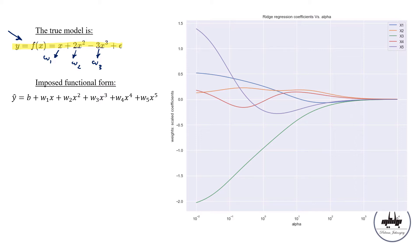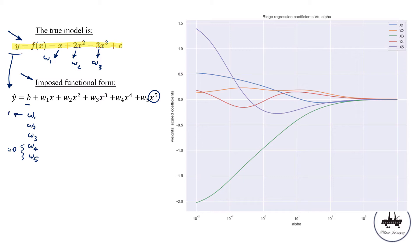We're going to impose a functional form to the model: a polynomial model with a bias term plus coefficients up to the power of 5. We have five weights to estimate: W1, W2, W3, W4, and W5. As a reminder, we know that W4 and W5 should be exactly equal to zero or close to zero, W1 should be 1, W2 should be 2, and W3 should be minus 3. Let's see if ridge regression is able to get close to these weights.